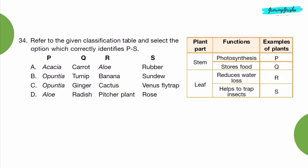Question 34: Refer to the given classification table and select the option which correctly identifies P, Q, R and S. Option C: P is Opuntia, Q is Ginger, R is Cactus, S is Venus Flytrap.